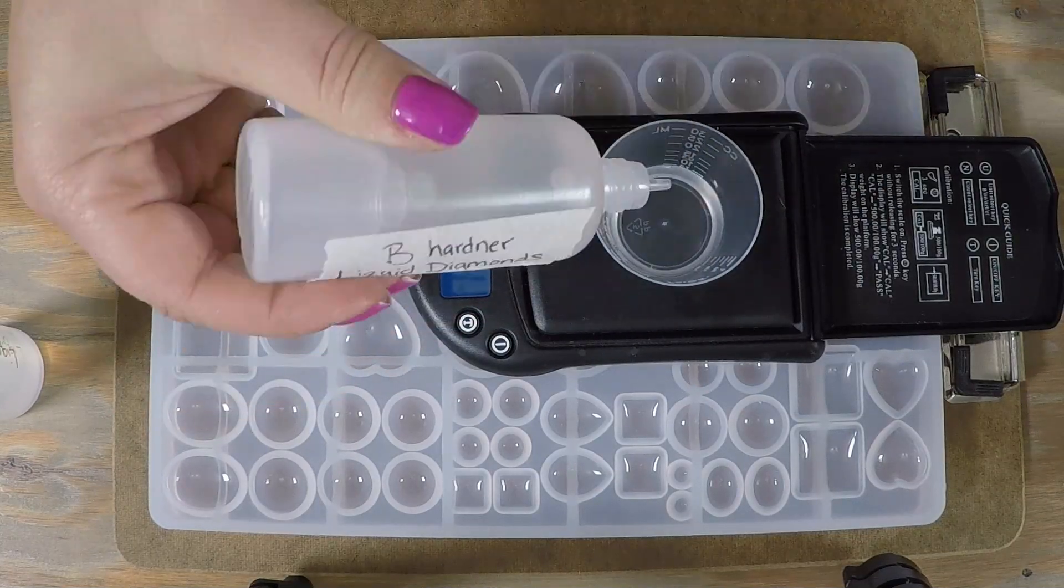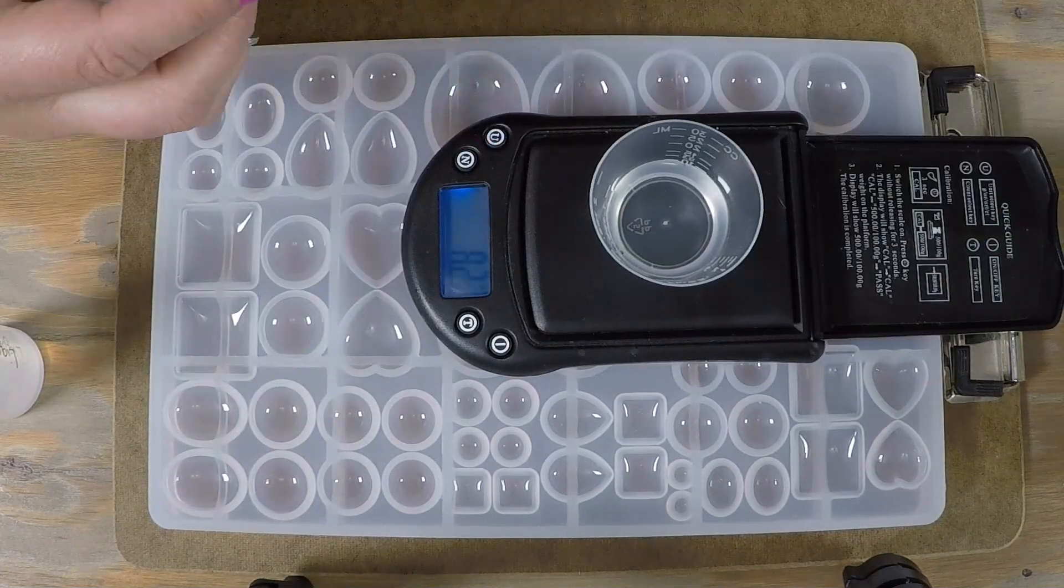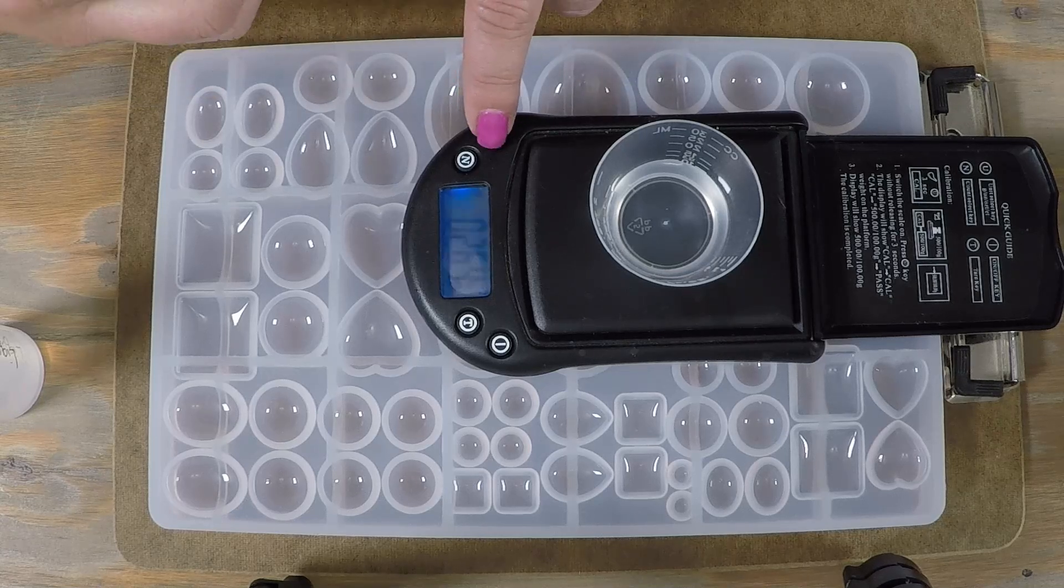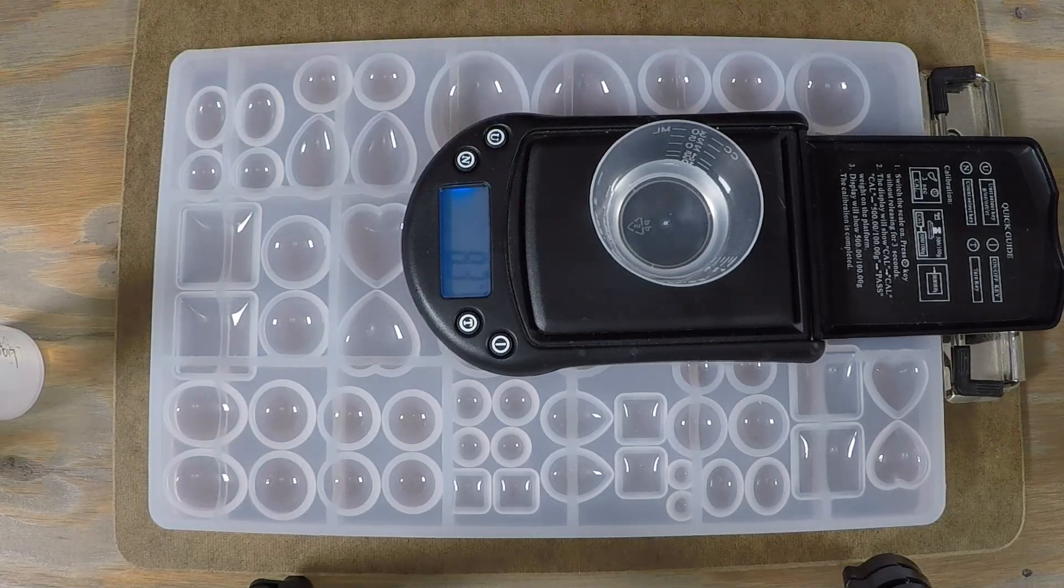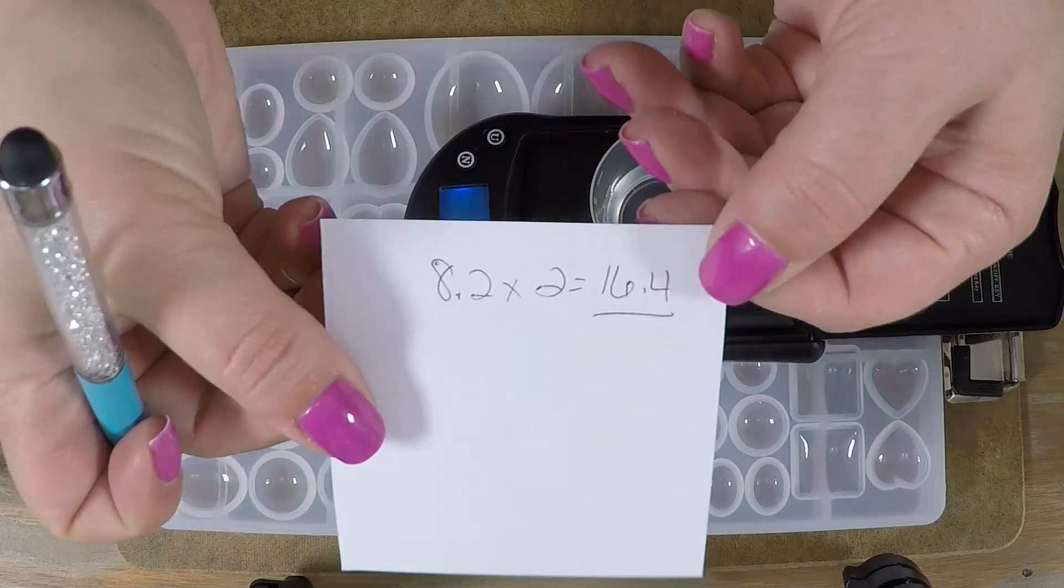You can do this resin by weight or volume, and you always want to make sure you put the hardener in first. I just put in how much I thought I would want to do, then I looked through the different options on the scale.